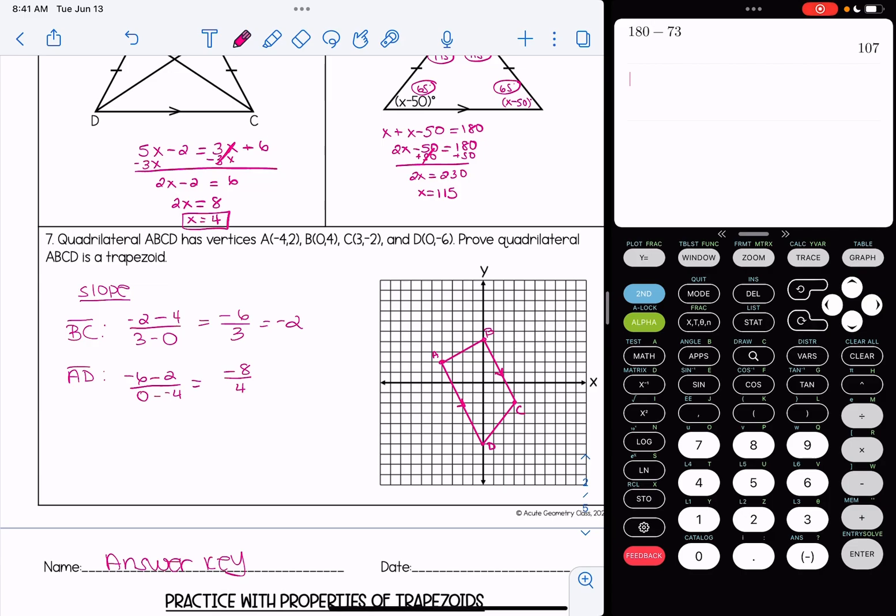This is why I would reduce my slope because negative 6 over 3 and negative 8 over 4 are not the same exact numbers. Of course, they're equivalent, but I'm just going to reduce it to negative 2. That way we can see that they are the same.